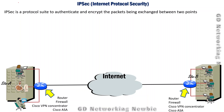In this video we are going to discuss IPSec, which stands for Internet Protocol Security. IPSec is a protocol suite that is used to authenticate and encrypt the packets being exchanged between two points. For example, let's say router one is one point and router two is the second point. If you want to send some data between these two points securely, we can use IPSec.